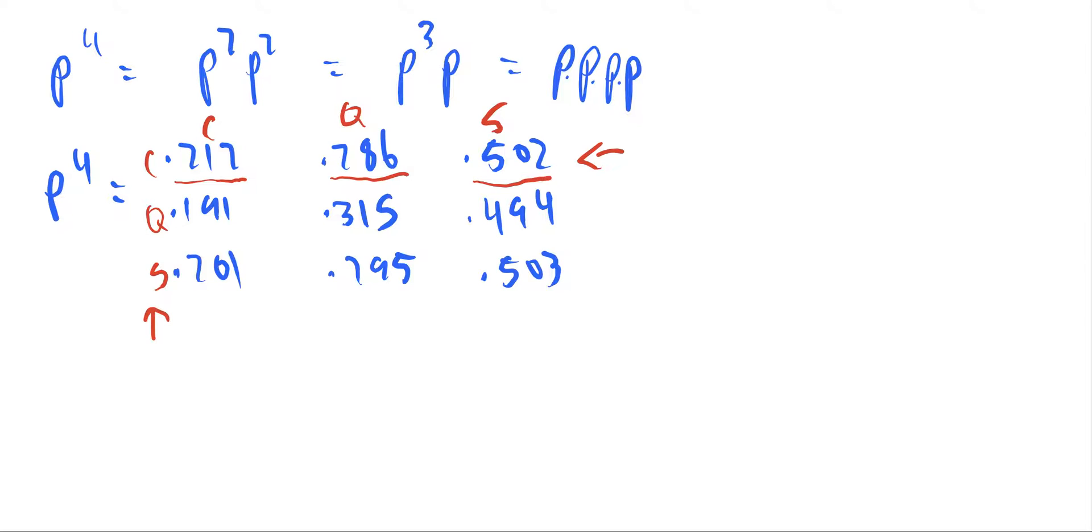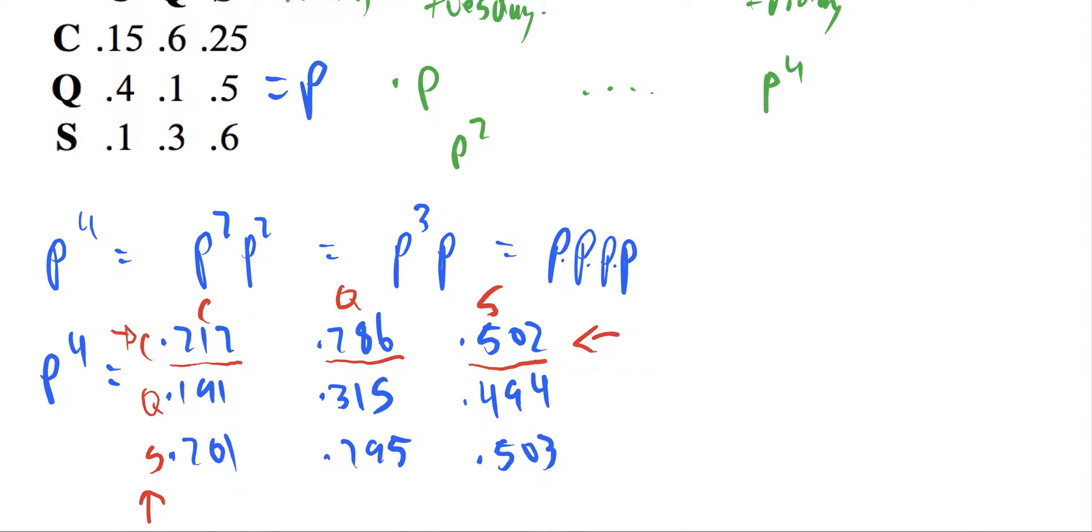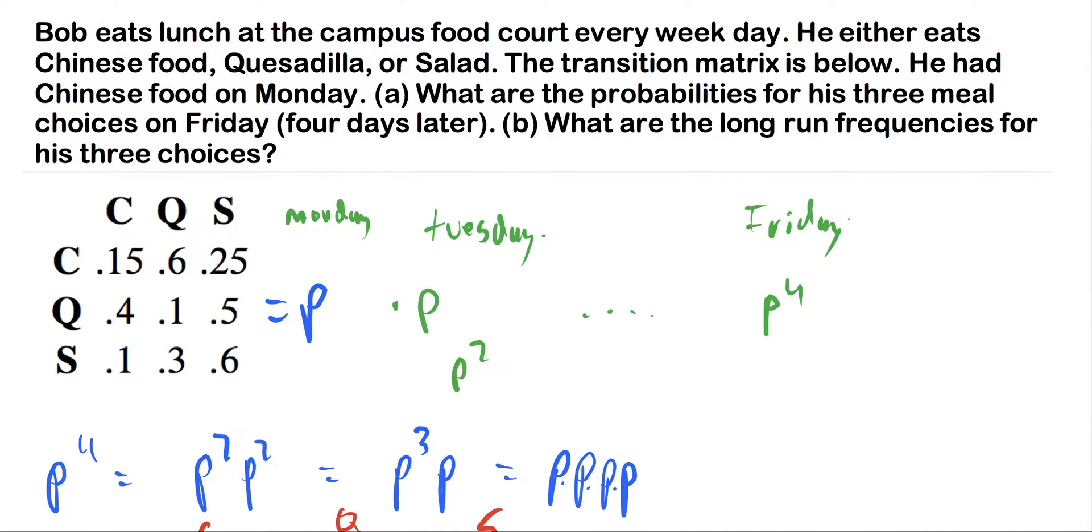This is the big thing. That's why we're looking at this top row because we were given that he ate Chinese food on Monday. So these are the probabilities for either eating Chinese food again, eating quesadillas, and we don't have to worry about the rest of this matrix. So that's the answer for part A.